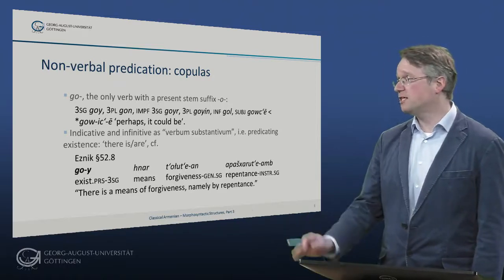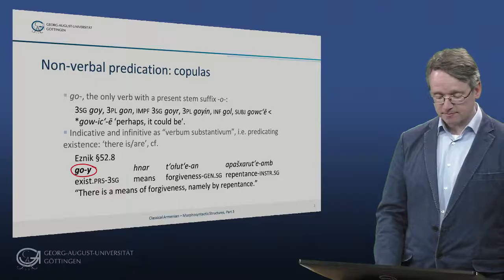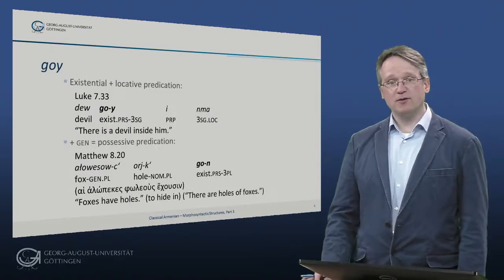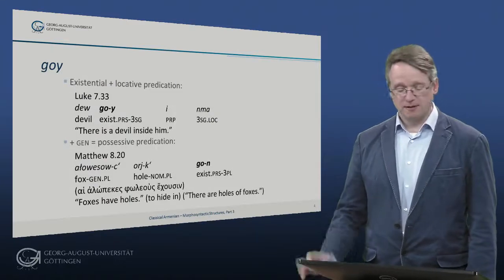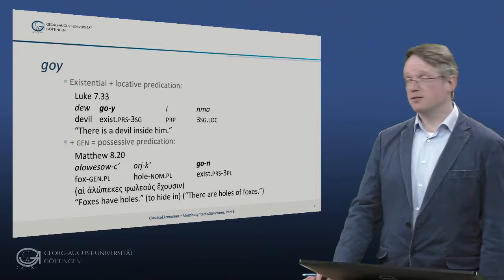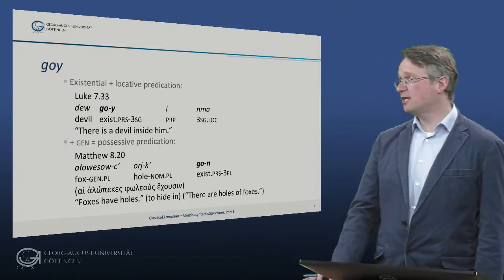Here's an example from Eznik: 'Go henar torutian apashcharutiam' — there exists a means of forgiveness, namely by repentance. 'Go' is also combinable with locative predication. Here's an example from Luke: 'Dev go innema' — there is a devil inside him.